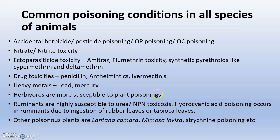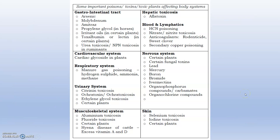Heavy metals such as lead and mercury are also important. Herbivores are more susceptible to plant poisoning, as many plants have toxic contents. Ruminants are highly susceptible to urea and non-proteinaceous nitrogen toxicosis. Other poisonous plants include Lantana camara, Mimosa invisa, and strychnine poisoning, which is very common in certain cases.